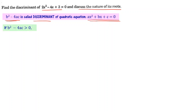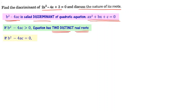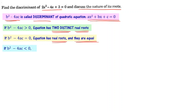If b² minus 4ac is greater than 0, the equation is going to have two distinct real numbers as roots. If b² minus 4ac is equal to 0, then the equation has real roots but they are equal. If b² minus 4ac is less than 0, then the given equation has no real roots.